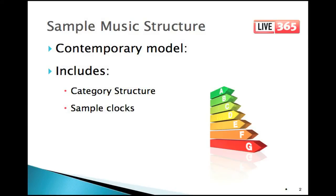In Part 2, I'll show a model of a possible category structure for a contemporary radio station — contemporary meaning one that's playing some new music. This would be loosely based on a top 40 radio station, or maybe country, hip-hop, alternative, or adult contemporary. This structure would be vaguely familiar to a programmer of any of these formats. Of course, oldies-based stations — oldies, classic rock, etc. — would be based on a slightly different concept. This model will include the category structure for this contemporary station and the rotation clocks.